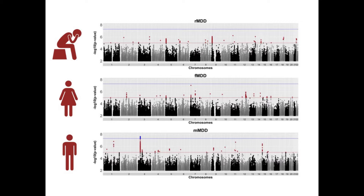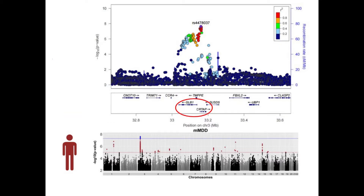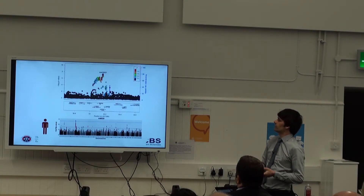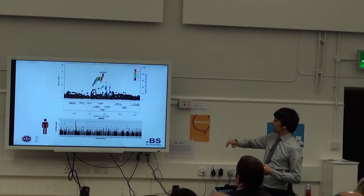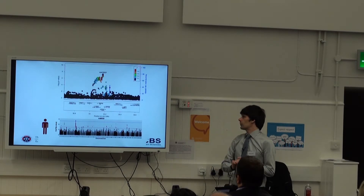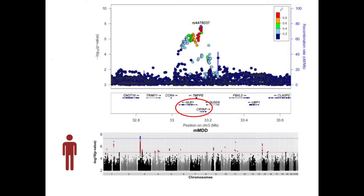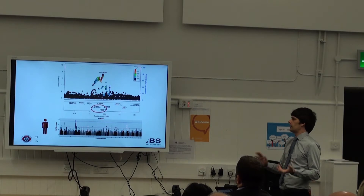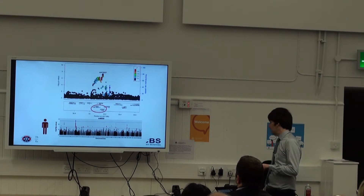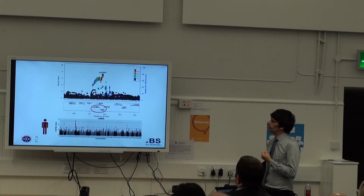Zooming in on that hit on chromosome 3, we can see there are quite a lot of loci that have all been pulled up together, which is a good sign and gives us more confidence in the signal. In the blocks beneath, we have the genes underlying that particular region, and two highlighted genes are part of a pathway that includes another gene involved in serotonin production, giving good confidence that this is a real hit.